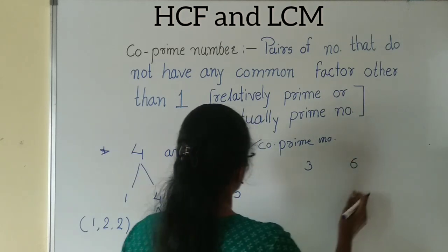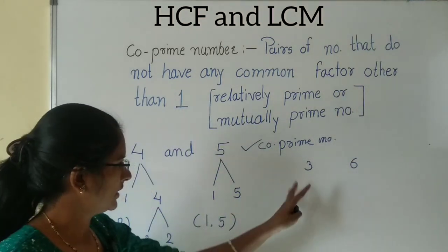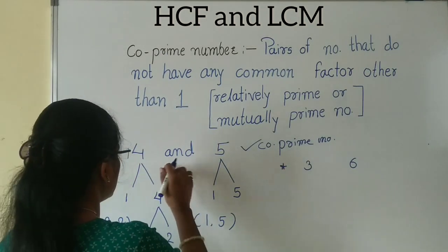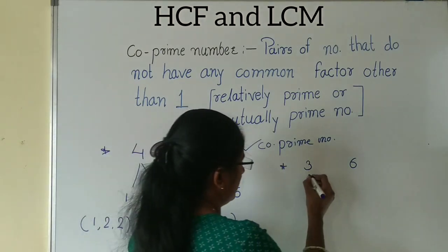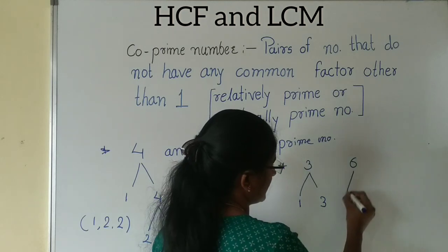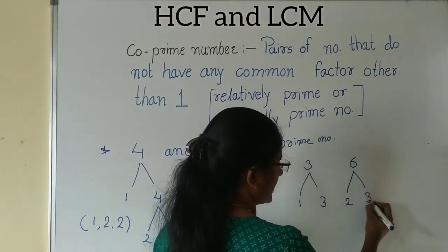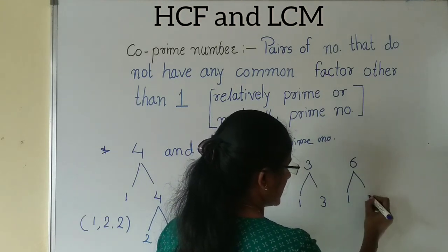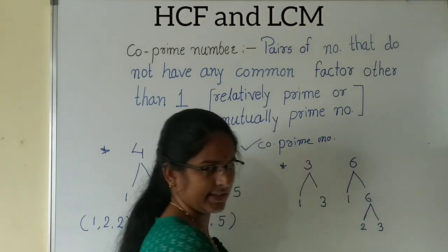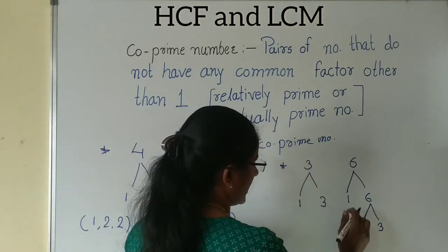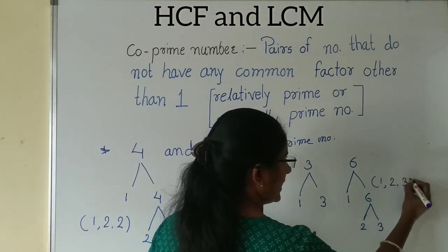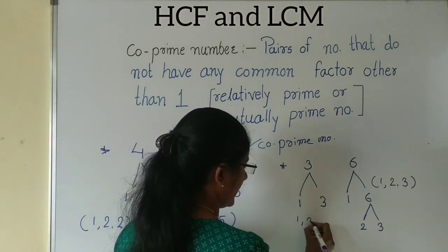Next example: 3 and 6. We can calculate and confirm whether this is a co-prime number or not. Find the factor of 3: 1 times 3 is 3. For 6: 1 times 6 is 6, and 2 times 3 is 6. So the factors of 6 are 1, 2, and 3. And the factors of 3 are 1 and 3.